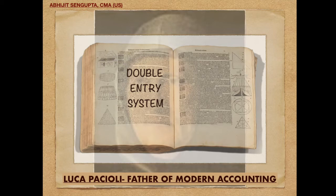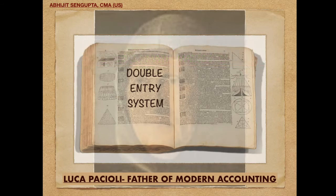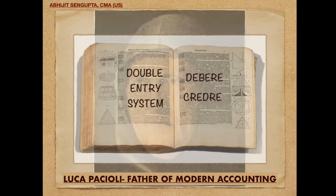Now, in the dual aspect, we are trying to explain two aspects — LHS should be equal to RHS. But they had a problem: in their times, negative numbers were generally not accepted in mathematics. So if you think about it, only with the help of a plus sign and without the minus sign, how do you explain it? That caused a difficulty. As a result, they preferred to use the words 'debere' and 'credre'.